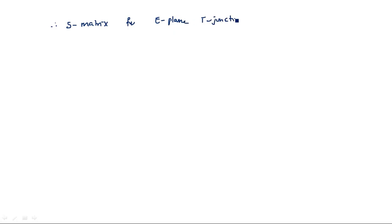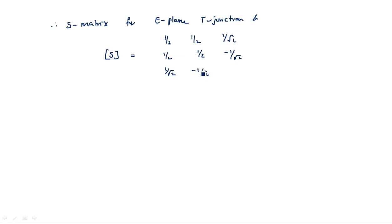Therefore, the S-matrix for the E-plane T-junction is: S = [1/2, 1/2, 1/√2; 1/2, 1/2, −1/√2; 1/√2, −1/√2, 0]. This is the scattering matrix of the E-plane T-junction. In the next video I will explain how this scattering matrix works with respect to applied inputs and outputs — what happens when input is applied to port 1 and port 2, and when input is applied at port 3. Thank you.